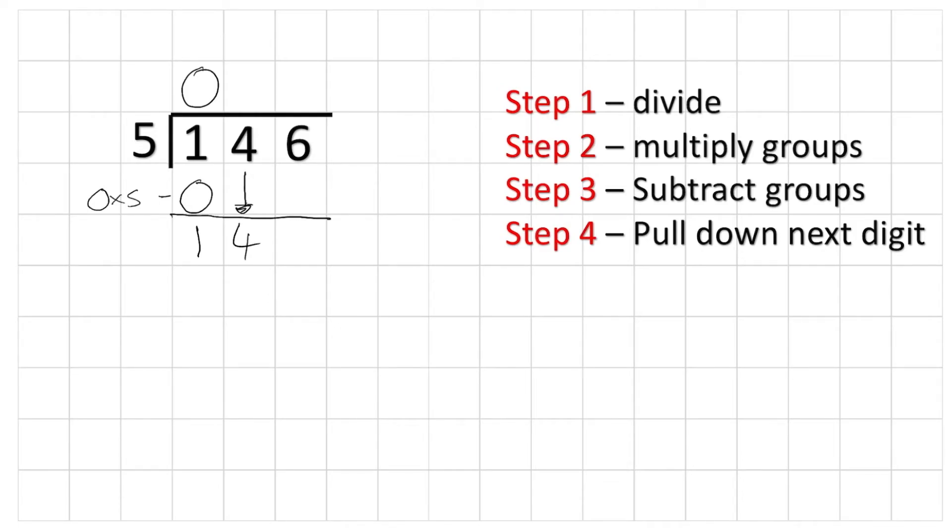Now, I can ask myself, how many groups of 5 are there in 14? 5, 10, 15. 15 is too far, so I have to stop at 10, so therefore there's 2 groups. 2 times 5 is 10. Subtract the 10, leaves me with 4. Bring down my 6.